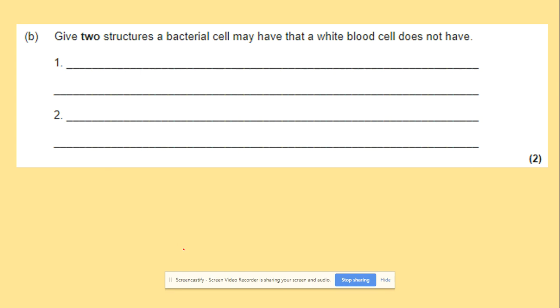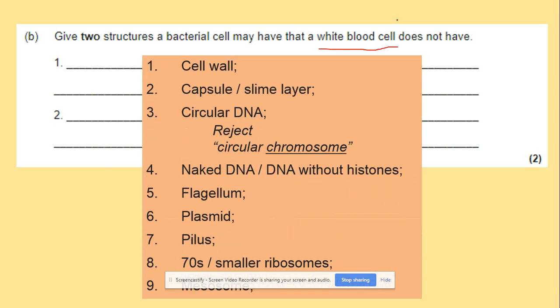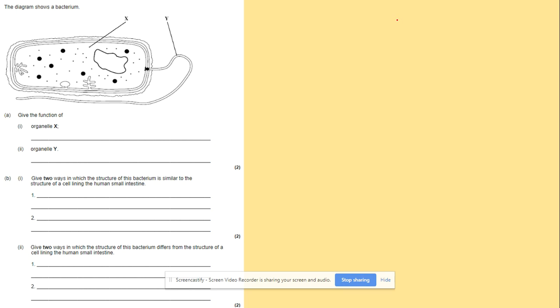And give two structures which bacterial cell might have but white blood cell will not. White blood cell is an example of the cells that you're going to have in humans. So what you're going to do is just compare those two like we did in our previous question. So all of those things you can now easily include in your answer. So nothing changes here.